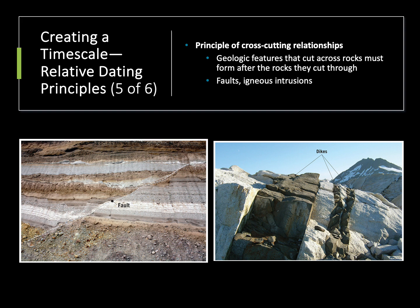Our next principle is called cross-cutting relationships. This is where some kind of geologic feature, such as an igneous intrusion or a fault or break in the rocks, cuts across pre-existing rocks. We always see that the rock that has been broken or intruded into will always be older than the break or the intrusion. That's because in order for a rock to be broken into multiple pieces, it has to exist before it can be broken or faulted.